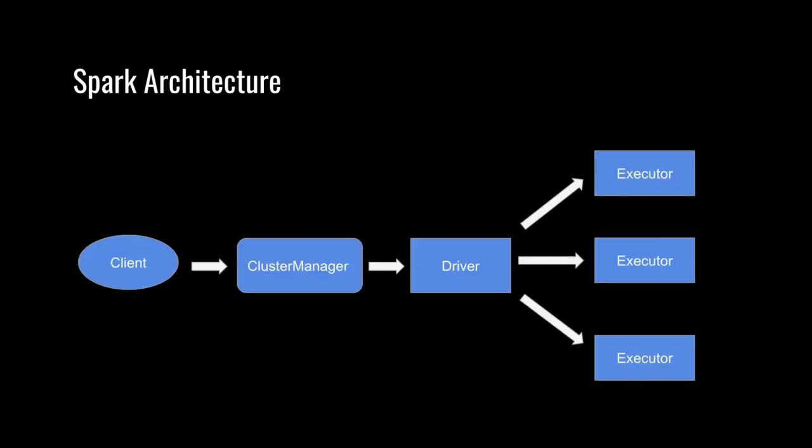The architecture of Spark is also master-slave, similar to HDFS and YARN. The driver is the master and the executor is the slave. The driver coordinates task dispatching and the executor does the real computation work. A Spark job can run in different cluster environments such as Standalone, YARN, Mesos, or Kubernetes, which is achieved by the cluster manager — each cluster environment has its own cluster manager.